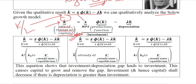Small s represents the marginal propensity to save, which is a very commonly used economic concept. It is multiplied with the production function represented by the Greek symbol φ, where k is again capital per worker. Then there is a minus sign followed by λ multiplied by capital per worker, and this product represents the depreciation in the overall economy. The product of MPS and φ(k) is the investment. So investment minus depreciation is what we have on the right-hand side.